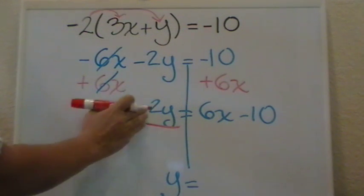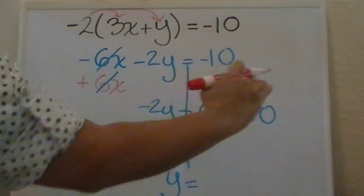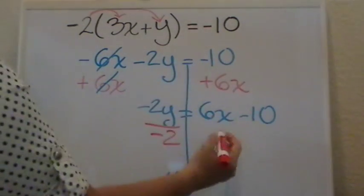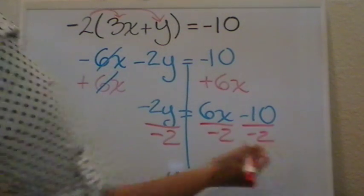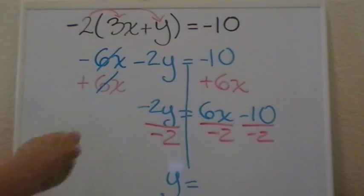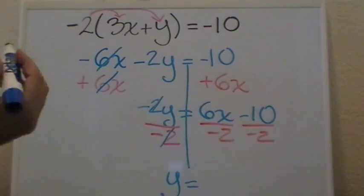Don't forget, you have a negative 2 multiplied, so you will have to divide by a negative 2. And on the other side, each one of your terms will have to get divided by negative 2 in this case. The negative 2 cancels, you have your y isolated or alone.